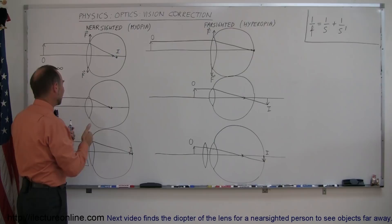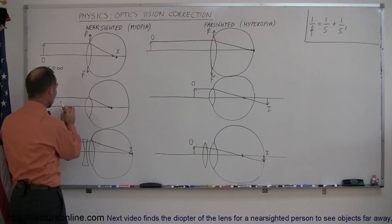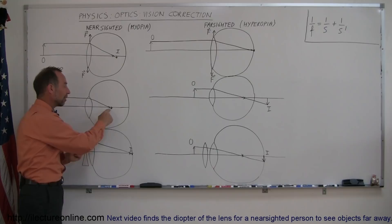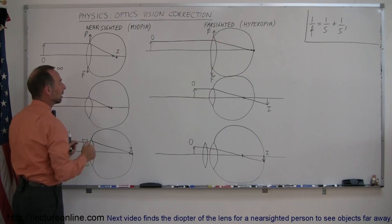Because when objects come closer, that automatically causes the image to fall farther back, away from the focal point, and so the bulge in the lens brings the focal point in and allows an image of something that's close up to form at the back of the eye.